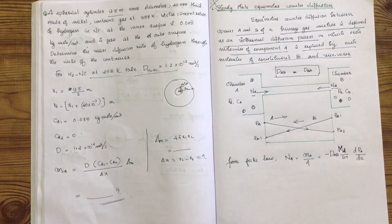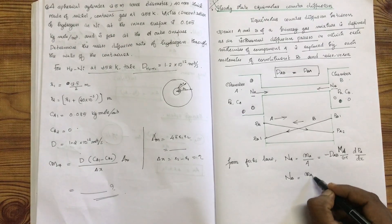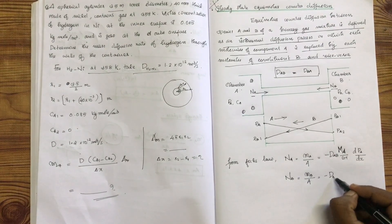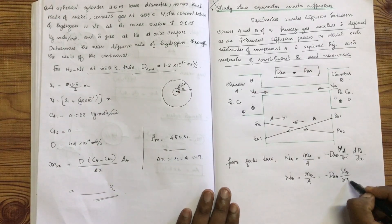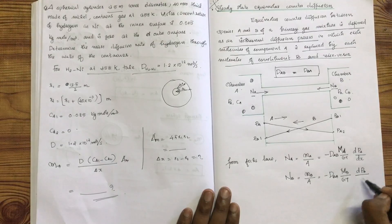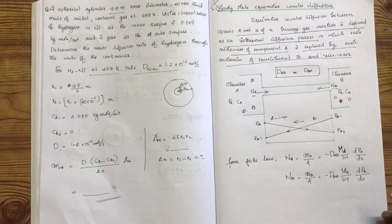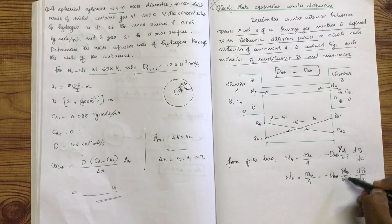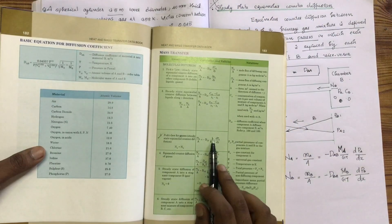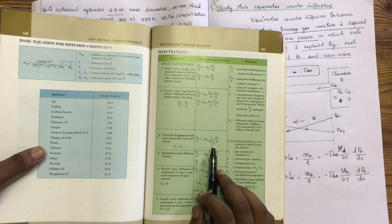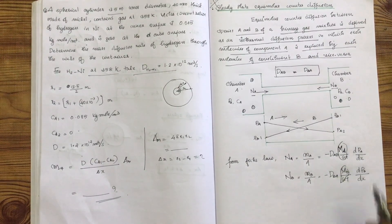Na is equal to minus DAB into mA by GT into dPA by dx. Similarly, NB is equal to minus DBA into mB by GT into dPB by dx. This can also be written as 1 by R into T.